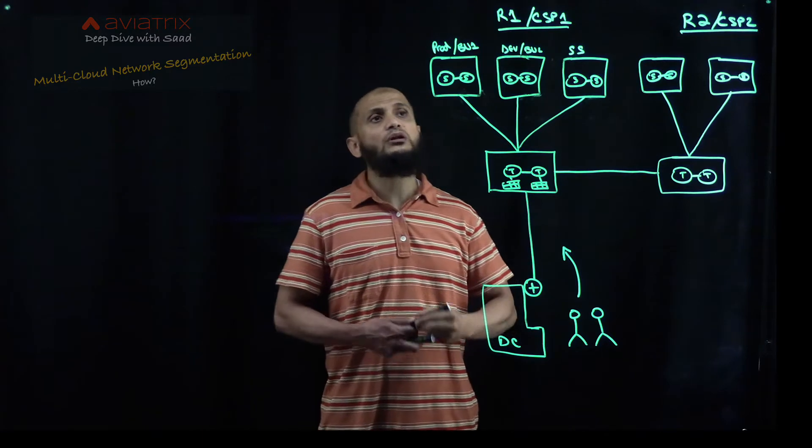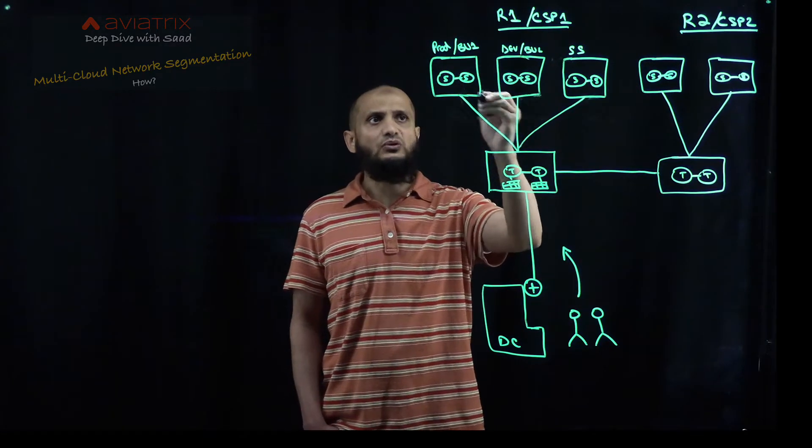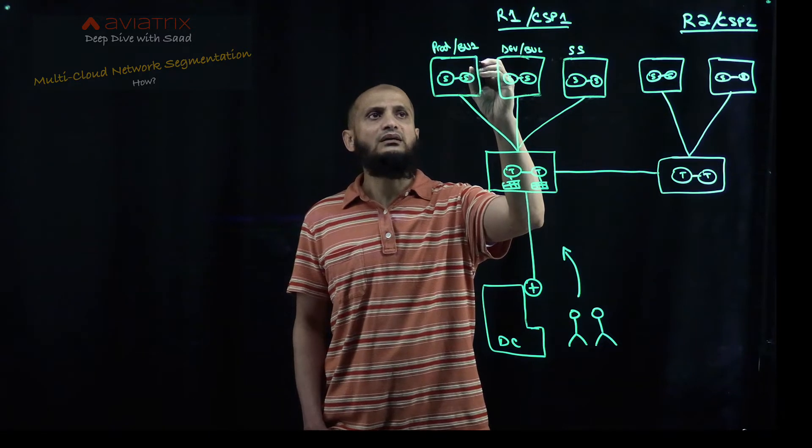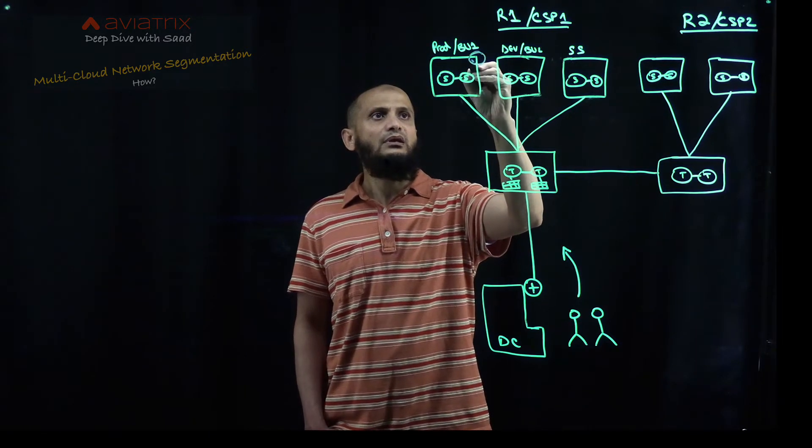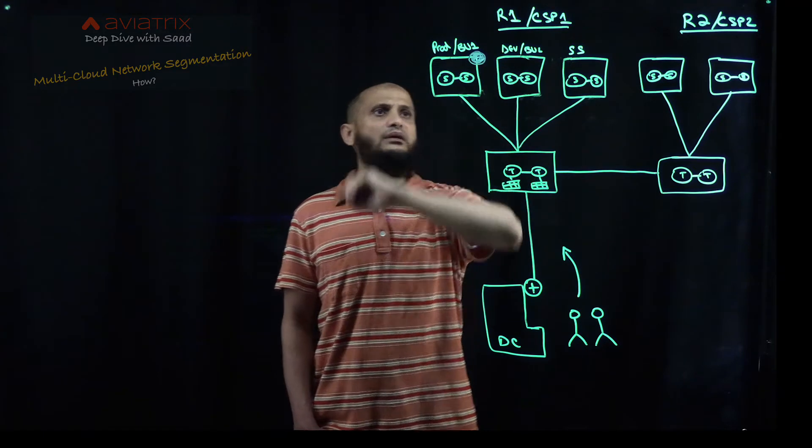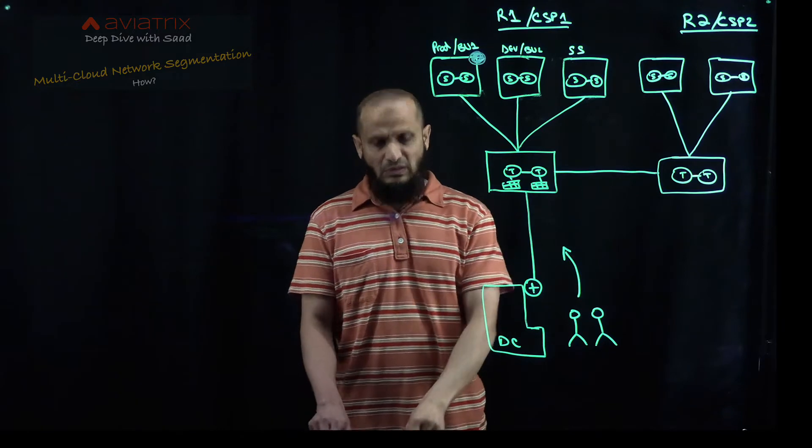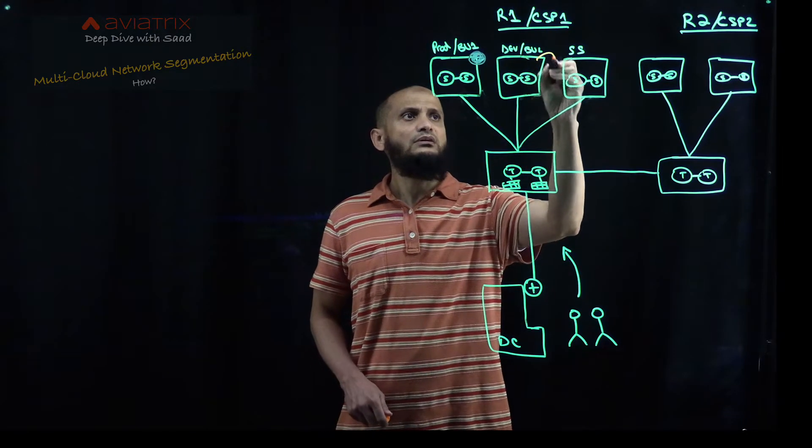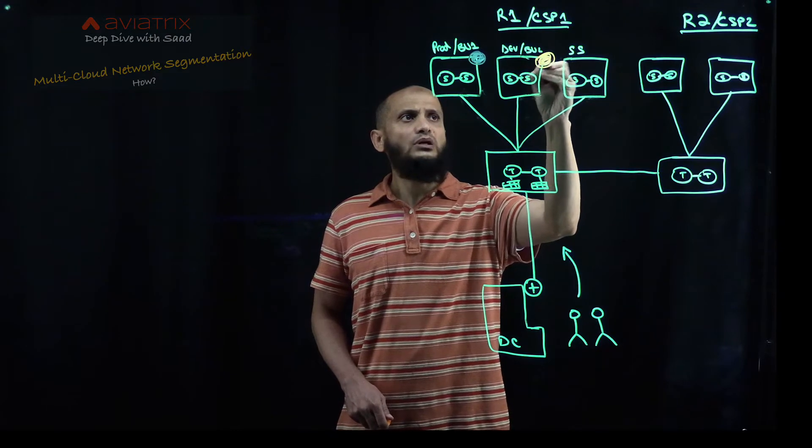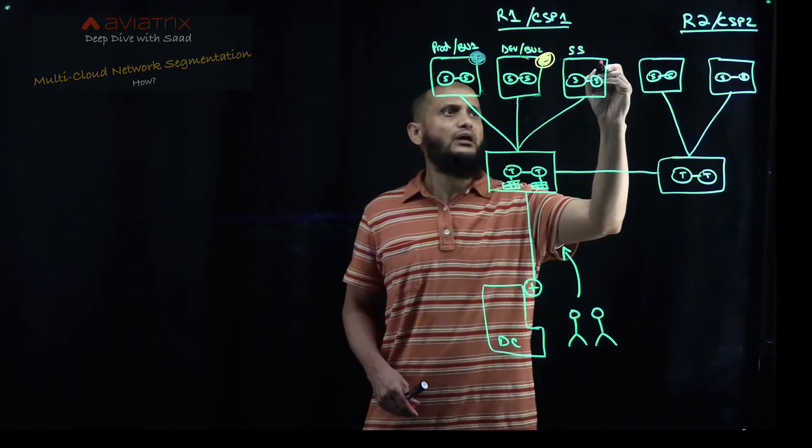let's say if I wanted to say either the prod or business unit one, this is my network domain one. Okay, and I'm going to color it with blue. And my dev or business unit number two is an orange one. And my shared services is red.